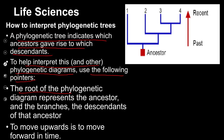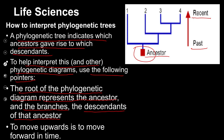They say to use the following pointers. The first thing is we look at the roots of the phylogenetic diagram — that represents the ancestor. We can see the roots on the diagram, and using the arrow and time scale on the side, we start at the past and move up towards more recent time. The branches are the descendants of that ancestor — they came from that ancestor. As the tree branches out, it gives rise to two new descendants.